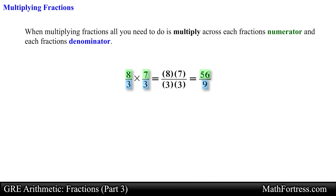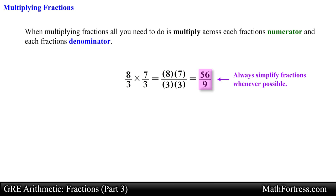When dealing with fractions, always remember to simplify and reduce the fraction whenever possible. In this example, the answer 56 over 9 is already reduced in simplest form since there are no common factors that can be cancelled out from both the numerator and denominator.